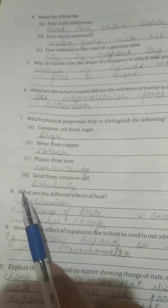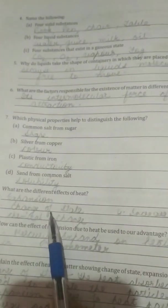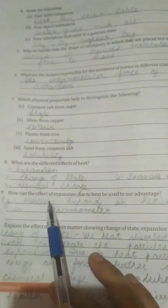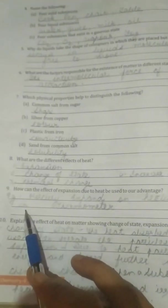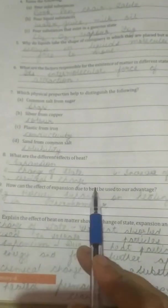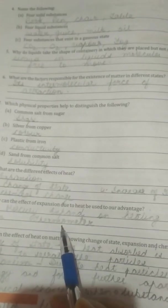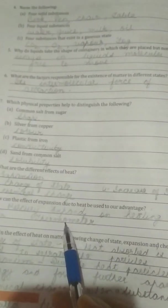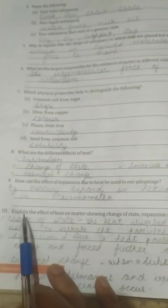Next eighth part, what are the different effects of heat? First is expansion, second change of state, third chemical change, and fourth increase of temperature. Ninth question, how can the effect of expansion due to heat be used to our advantage? Example, mercury expands in heating in thermometer. So mercury is used in thermometer, and when we use to keep under our underarms or inside the mouth, with the heat it expands and tells the temperature of the body.